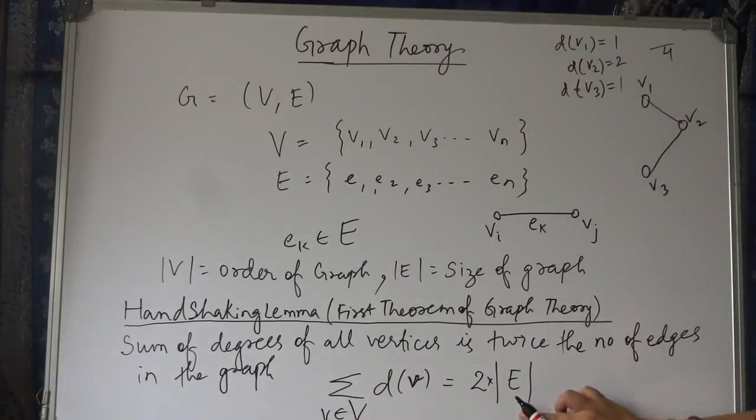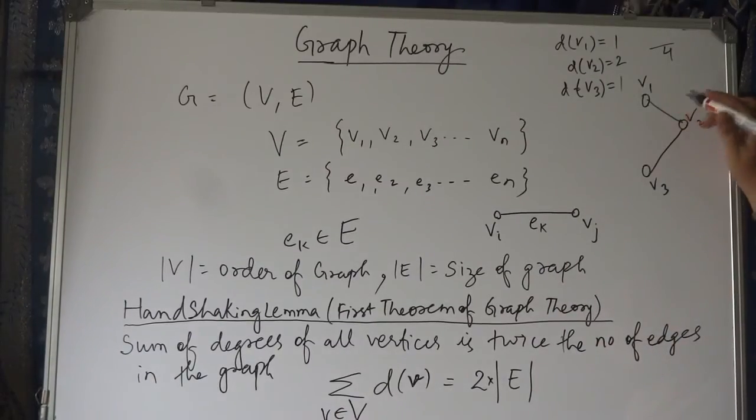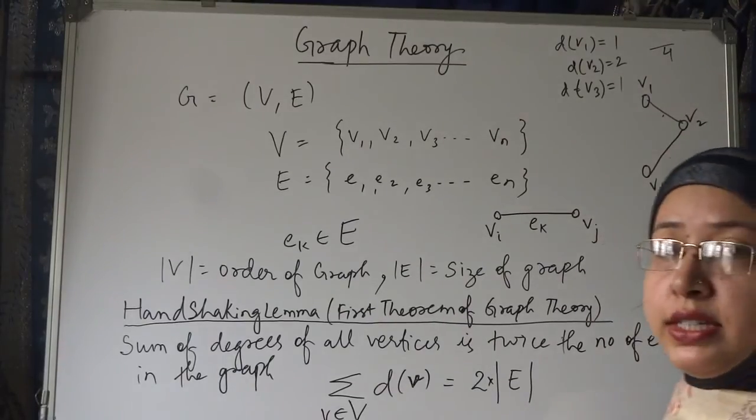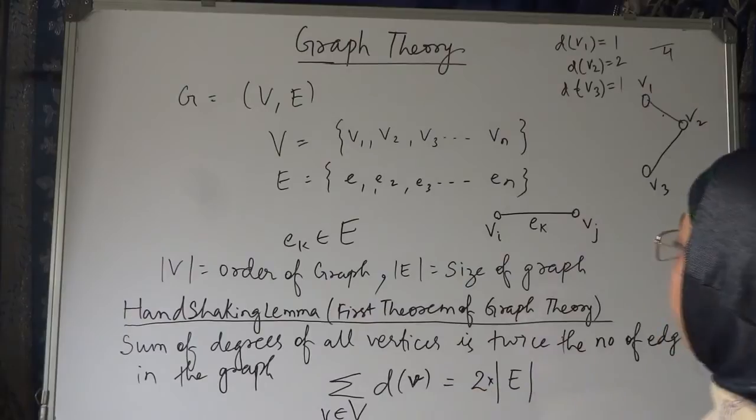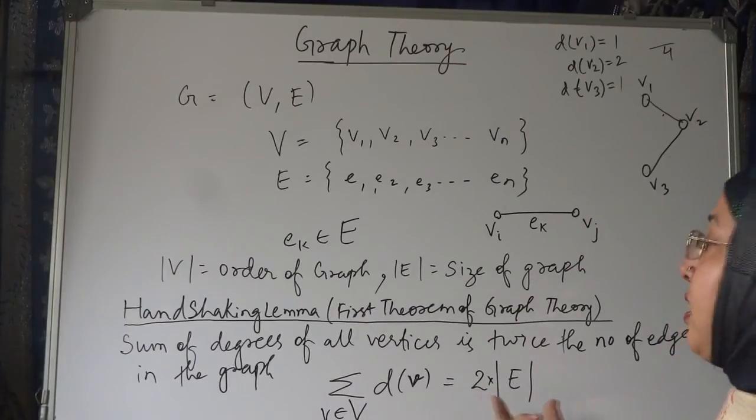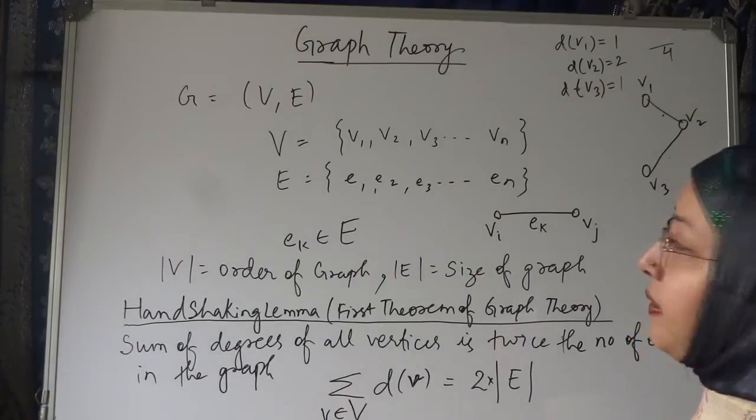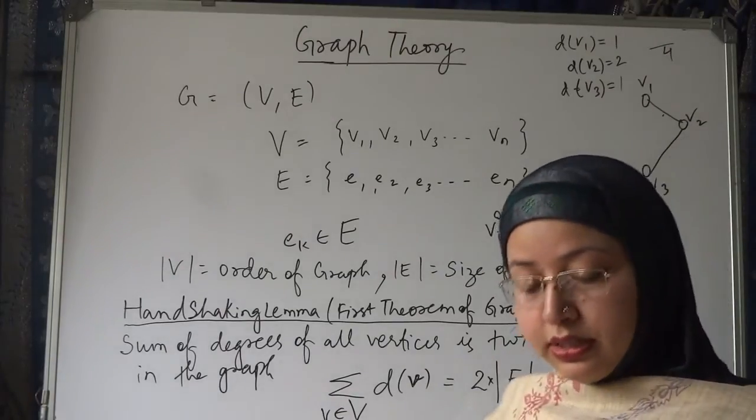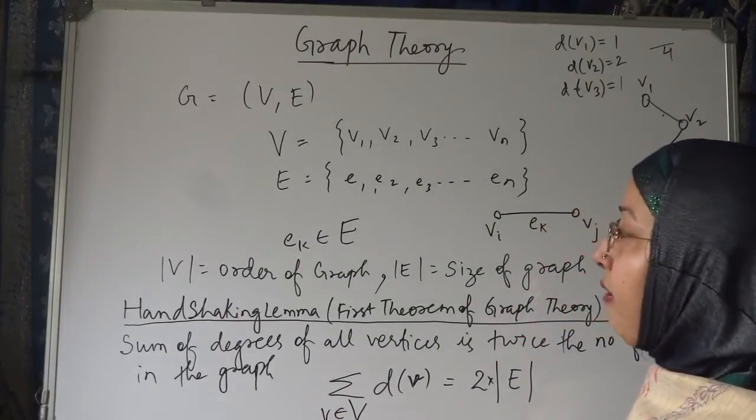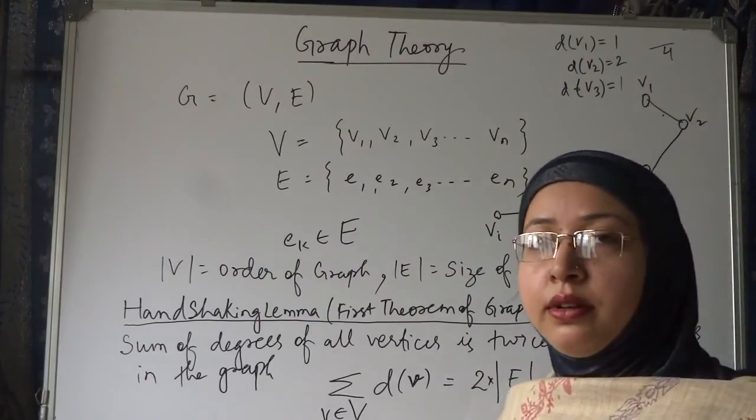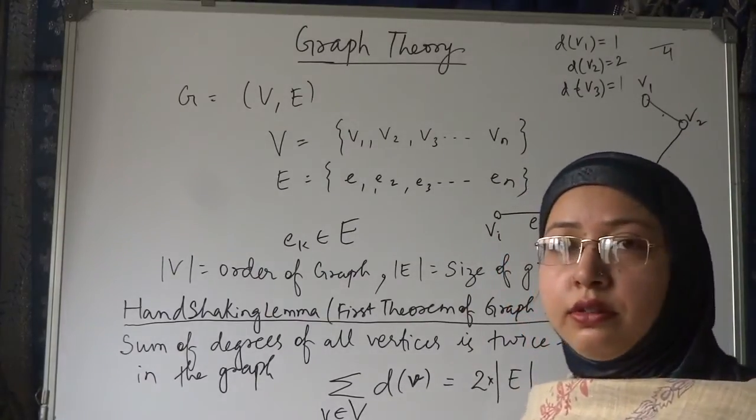Now, see, twice the number of edges. How many edges are there? This is 1 edge, this is 1 edge—2. When you twice it, it will become 4. So, see, sum of degrees of all vertices is equal to twice the number of edges. So we will see many examples based on this. You just note it down, I will erase it and then move on. You pause the video and note it down.